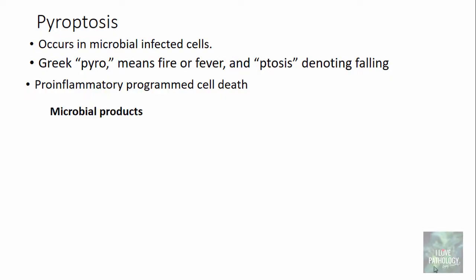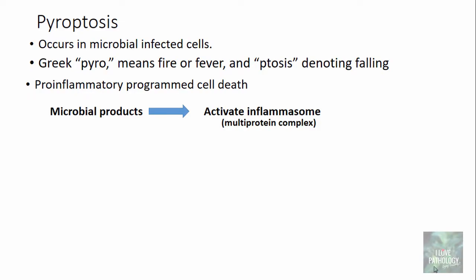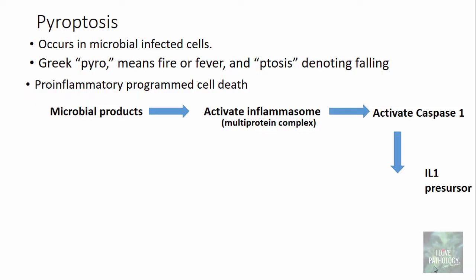Once microbial infection occurs, the microbial products entering into the cell activate a multi-protein complex called the inflammasome. This inflammasome activates caspase-1, which is neither an initiator nor an executioner caspase and has nothing to do with regular apoptosis. Caspase-1 converts the interleukin-1 precursor to active interleukin-1, which mediates the onset of fever and recruits leukocytes.